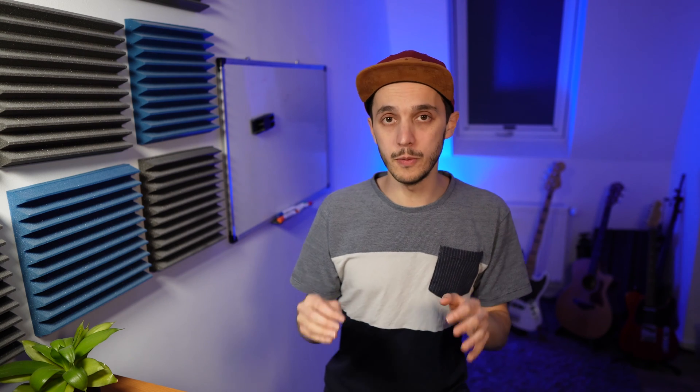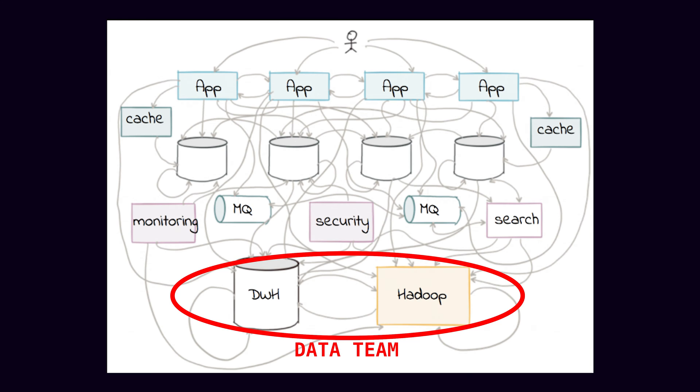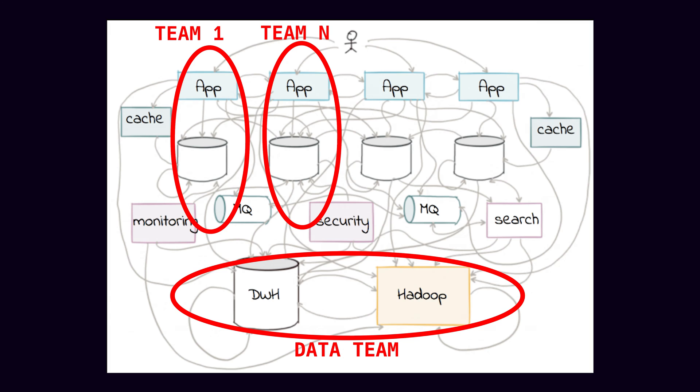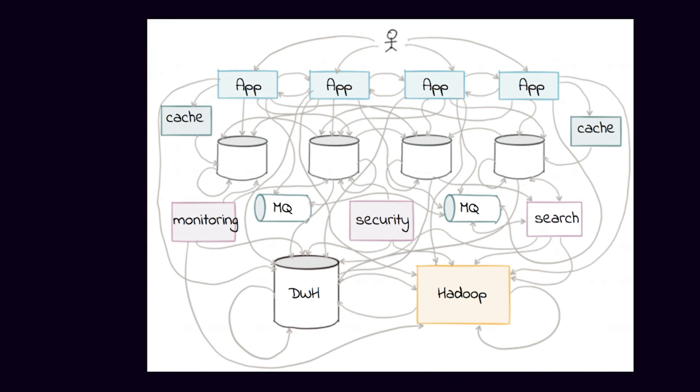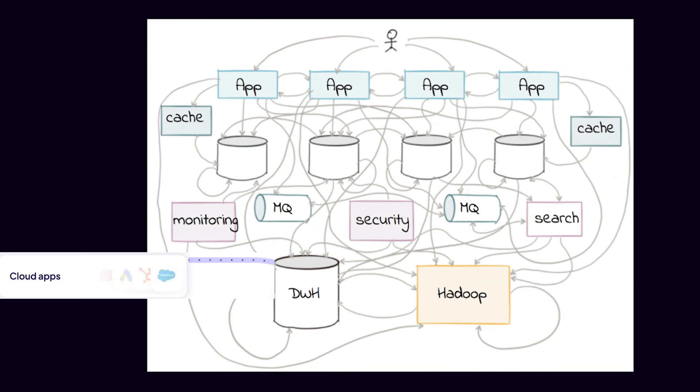Data teams are often put at the center of a huge spaghetti ball in terms of infrastructure. You're going to have one team with one microservice and one or more databases, then another team with another microservice and another database, and so on and so forth. Add on top of that all the external providers and SaaS services that provide data, and you have the perfect spaghetti alla carbonara. So if you work in data, chances are high you've faced this problem multiple times.